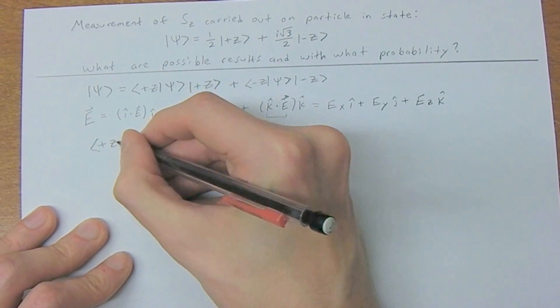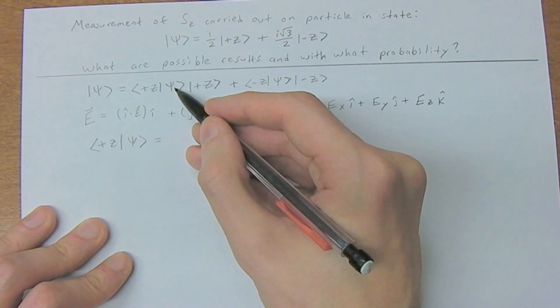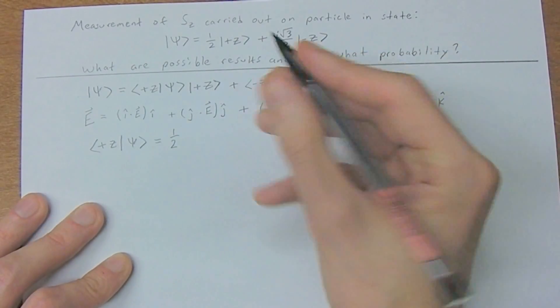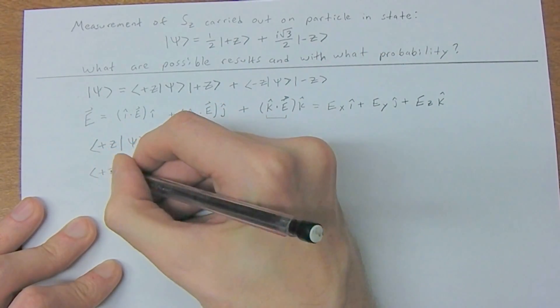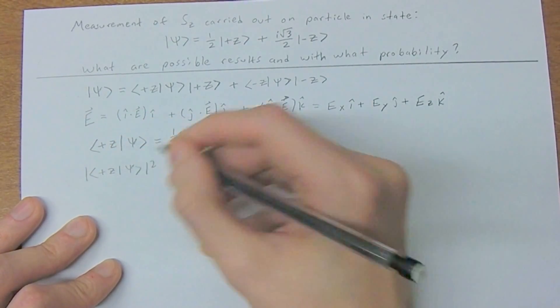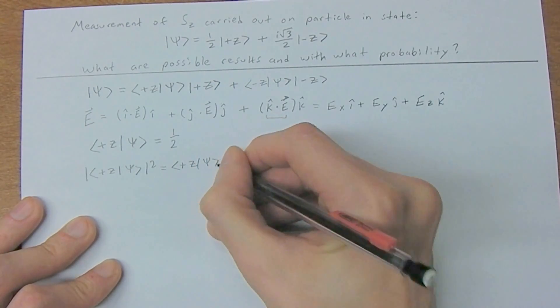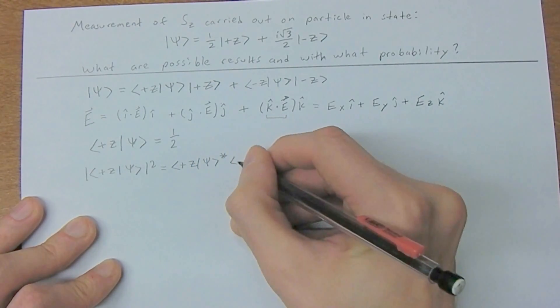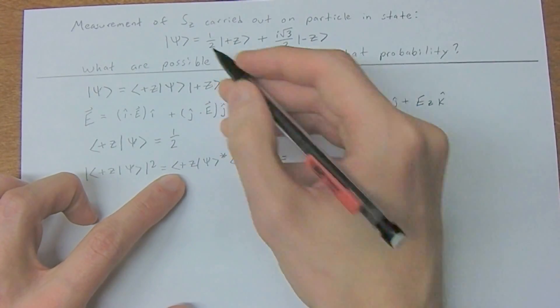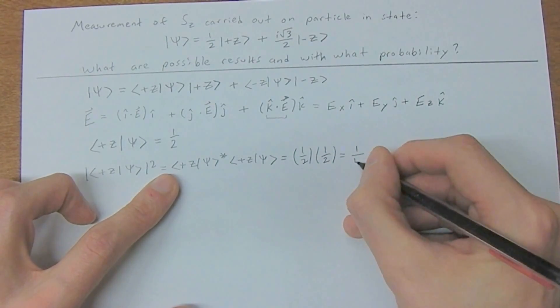Let's look at our probability amplitude. This probability amplitude we know is equal to one half. Now to get the probability, all we do is multiply that by its complex conjugate. So complex conjugate times the non-complex conjugate. There's no i in our term, so we just get a half times a half or one quarter.